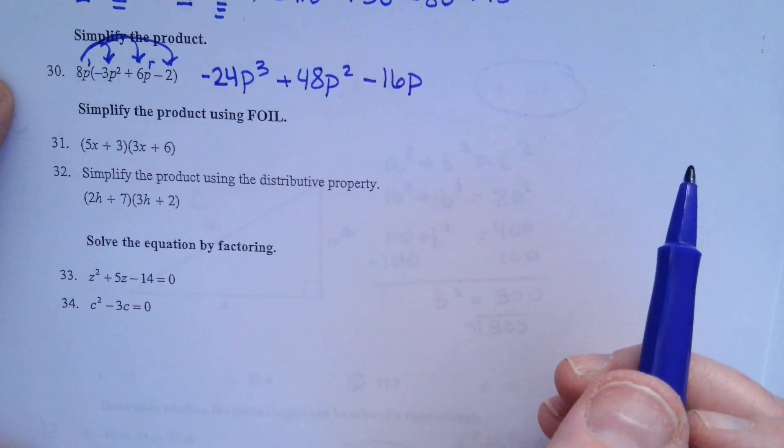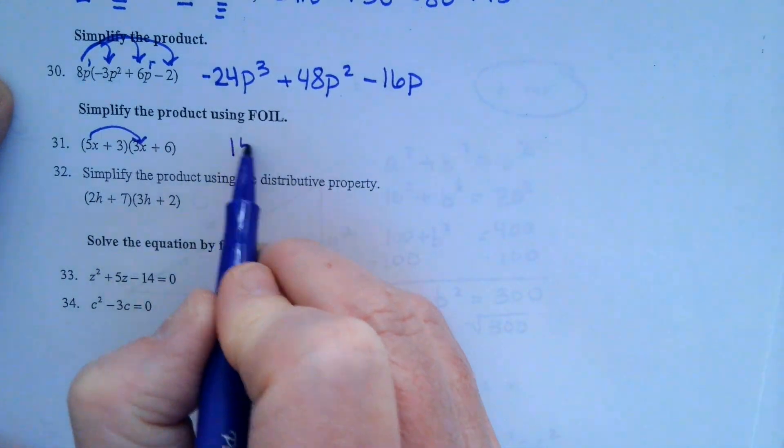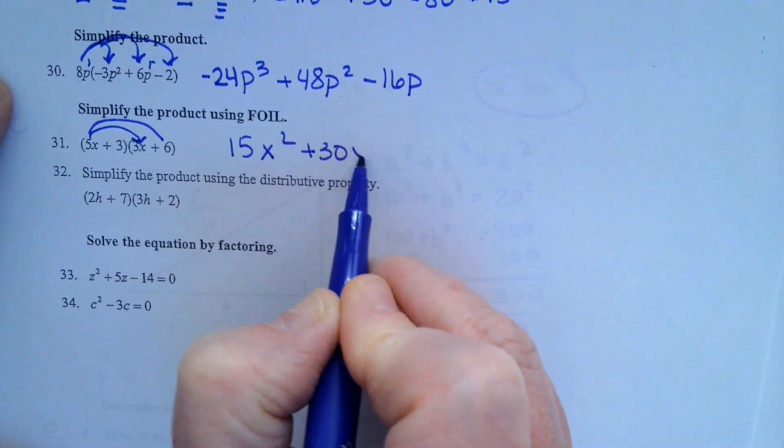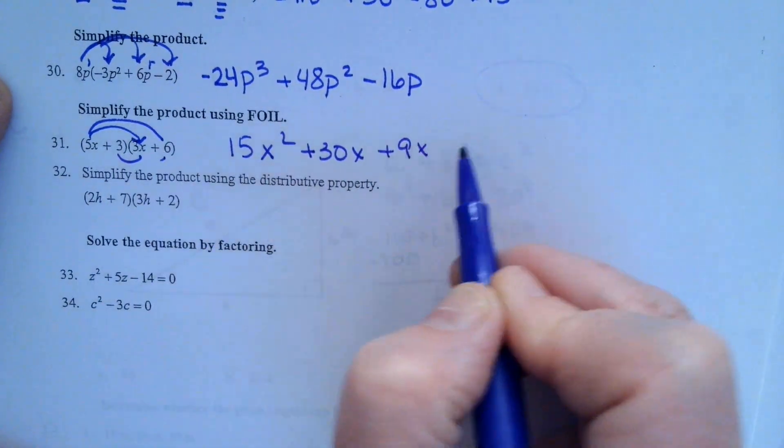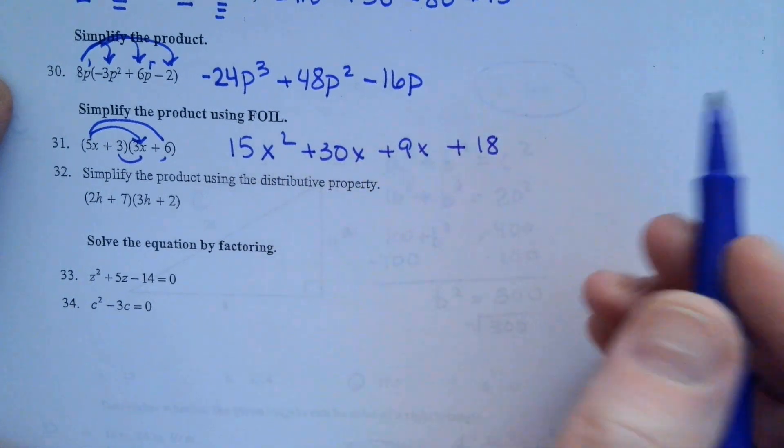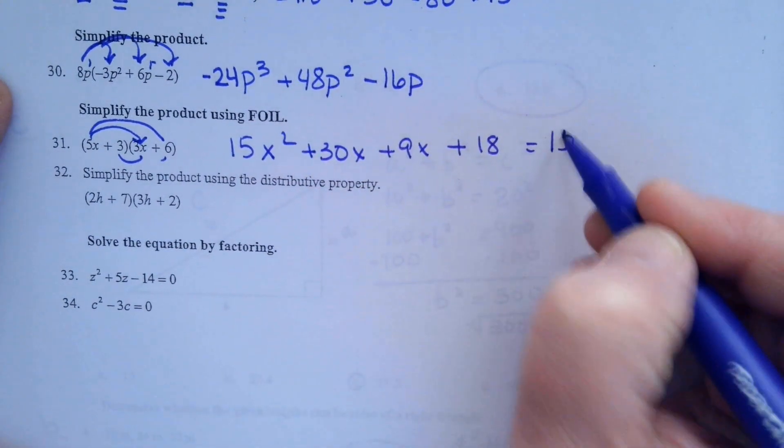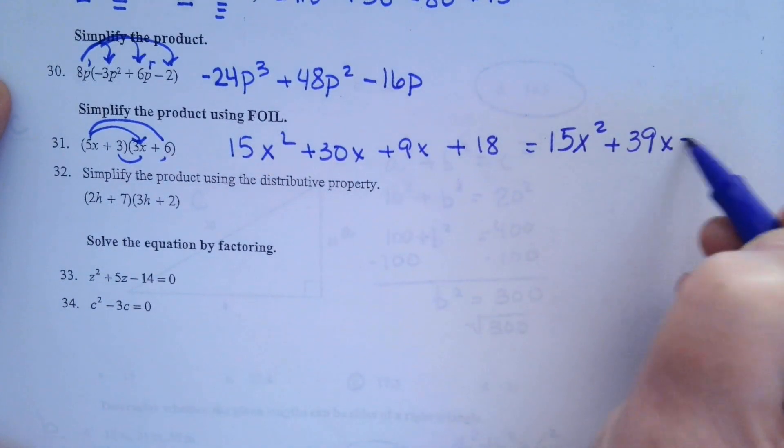31, we're going to multiply using FOIL. 5x times 3x is 15x squared. 5x times 6 is 30x. 3 times 3 is 9x. And 3 times 6 is 18. Usually when you do that, the numbers in the middle will combine. So when you simplify, you're going to get 15x squared plus 39x plus 18.